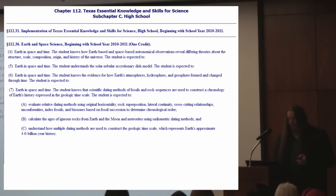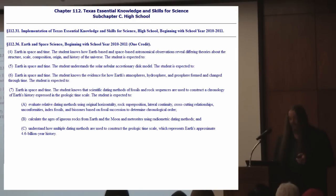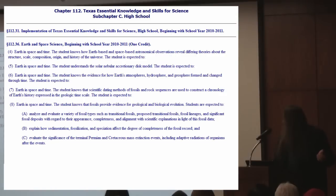Students also calculate the ages of igneous rocks from Earth and moon meteorites using radiometric dating methods, and understand how multiple dating methods are used to construct the geologic time scale, which represents Earth's approximate 4.6 billion year history. The student further knows that fossils provide evidence for geological and biological evolution.